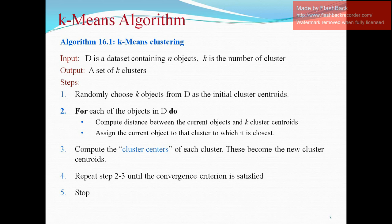Now, second steps take a look which have two tasks to perform. First is compute distance between the current object and the K cluster centroids. Assign the current object to that cluster to which it is closest. Now, third step says that compute the cluster centers of each cluster. These new cluster centers are these new cluster centroids. This second and third step keep on repeating until convergence criteria is satisfied. Fifth is stop.